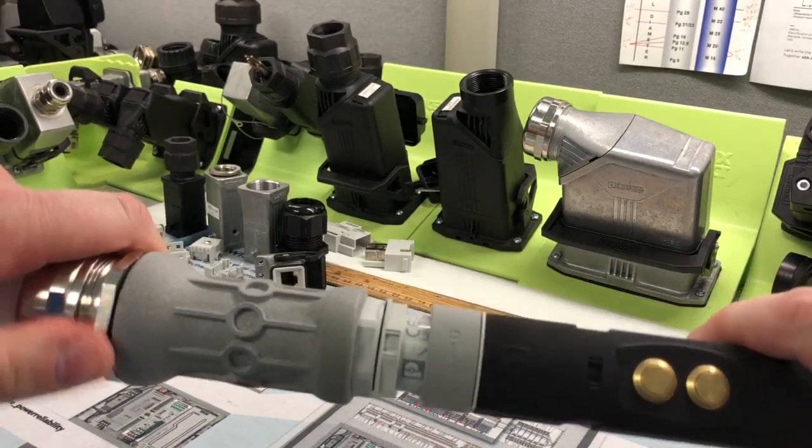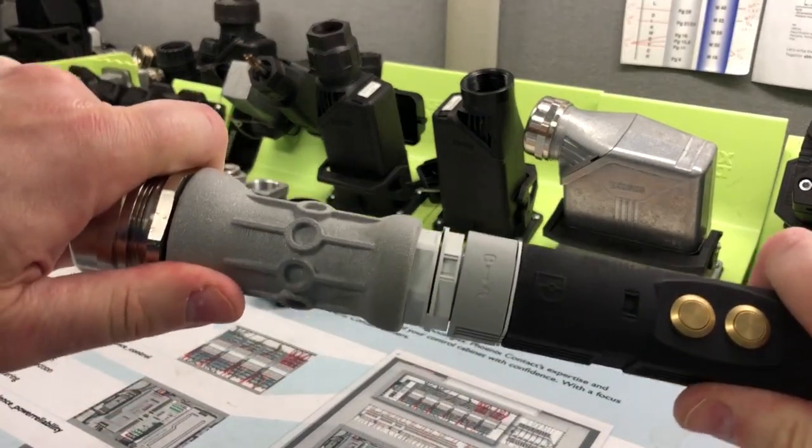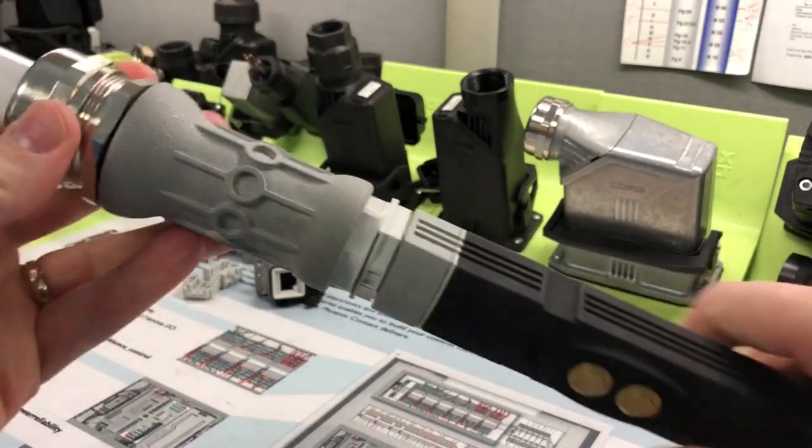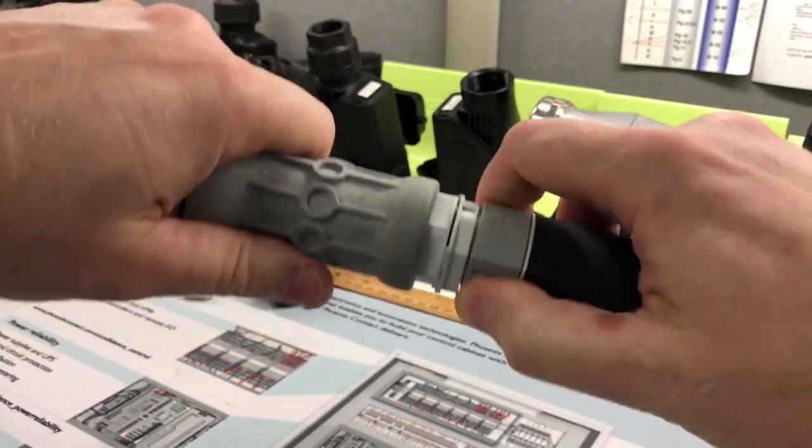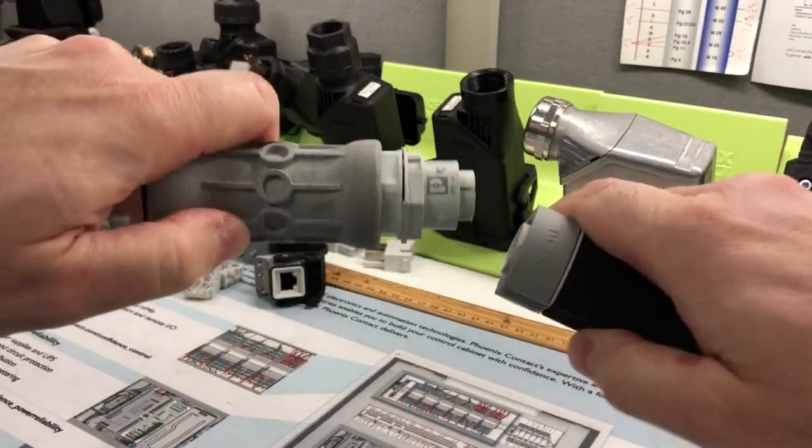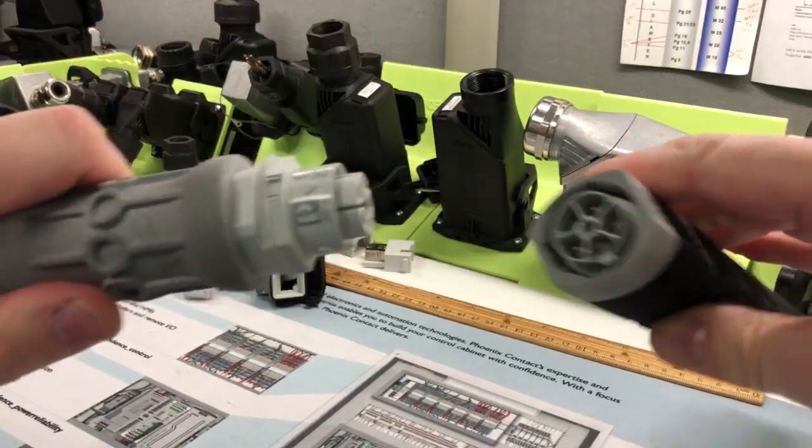I replaced the five-position permanent fixed connector with this disconnect that is a push-to-lock, twist-to-unlock. So now I can take this and just pop it together.